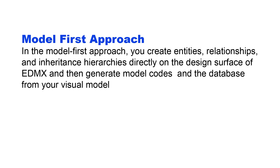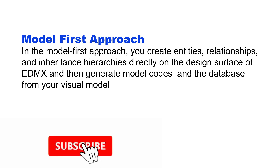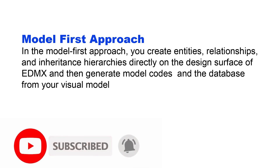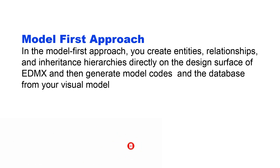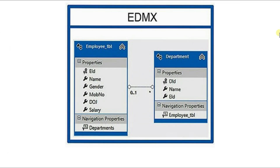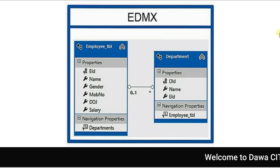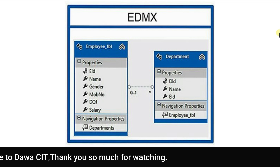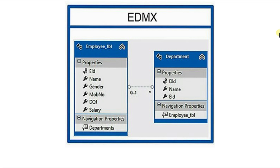In the model first approach, you create entities, relationships, and inheritance directly on the design surface of EDMX, and then generate model codes and the database from your visual model. In other words, first you create entities — that is tables and their relationships — on the design surface of EDMX, and then Entity Framework generates classes, properties, DB context, as well as the database and tables from your visual model.